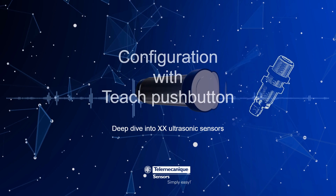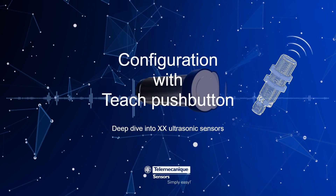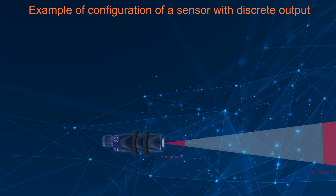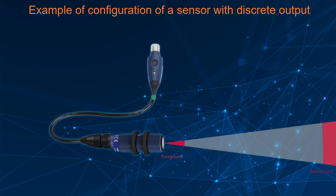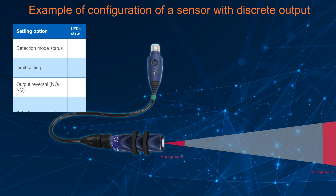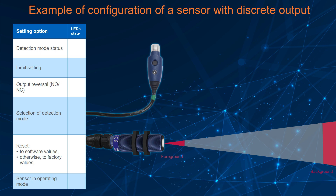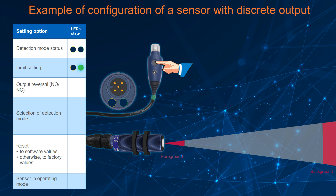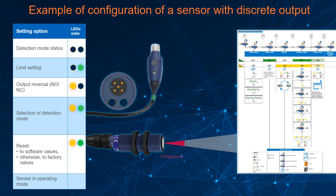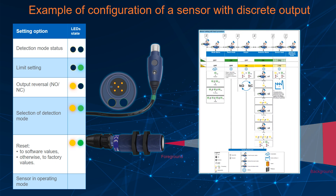Configuration with the TEACH push button. For configurable sensors with discrete output, the TEACH button provides access to various setting options. To access these different options, simply hold down the button and release it when the LED status corresponds to the desired option. These options are described in the instruction sheet of the sensor.